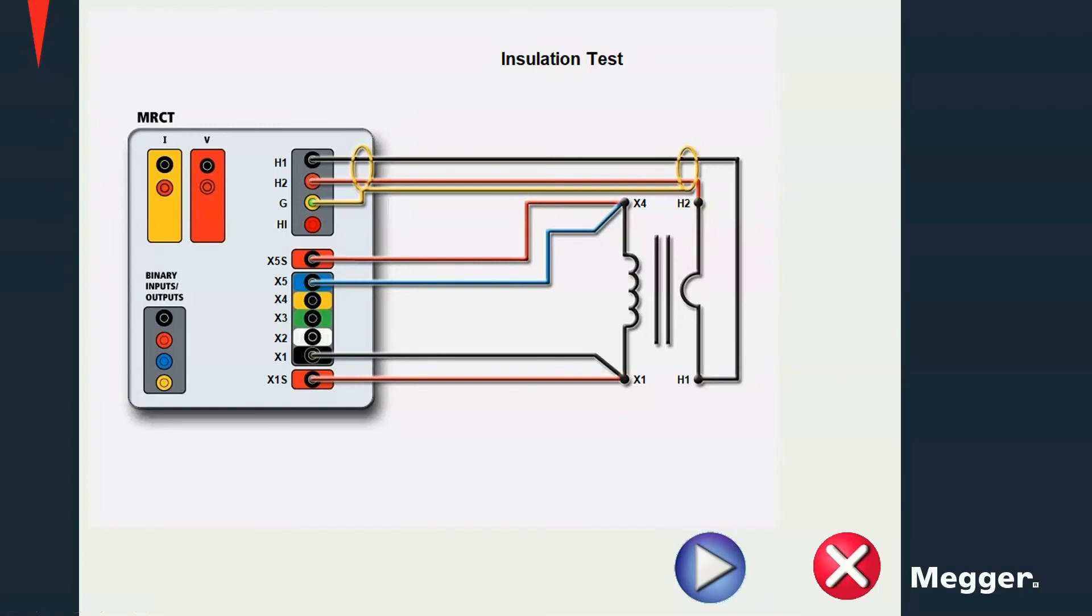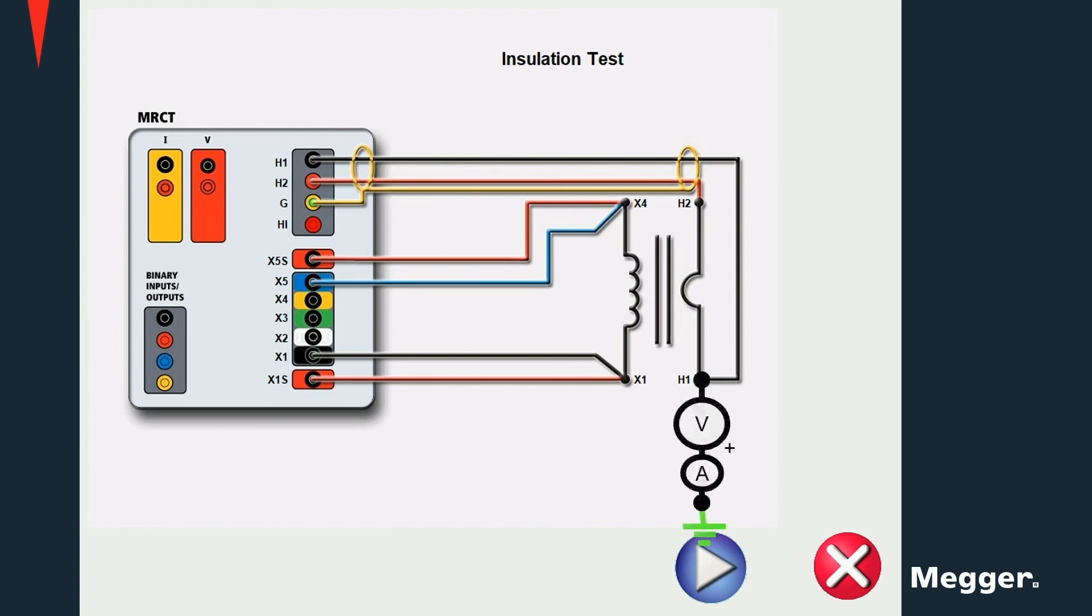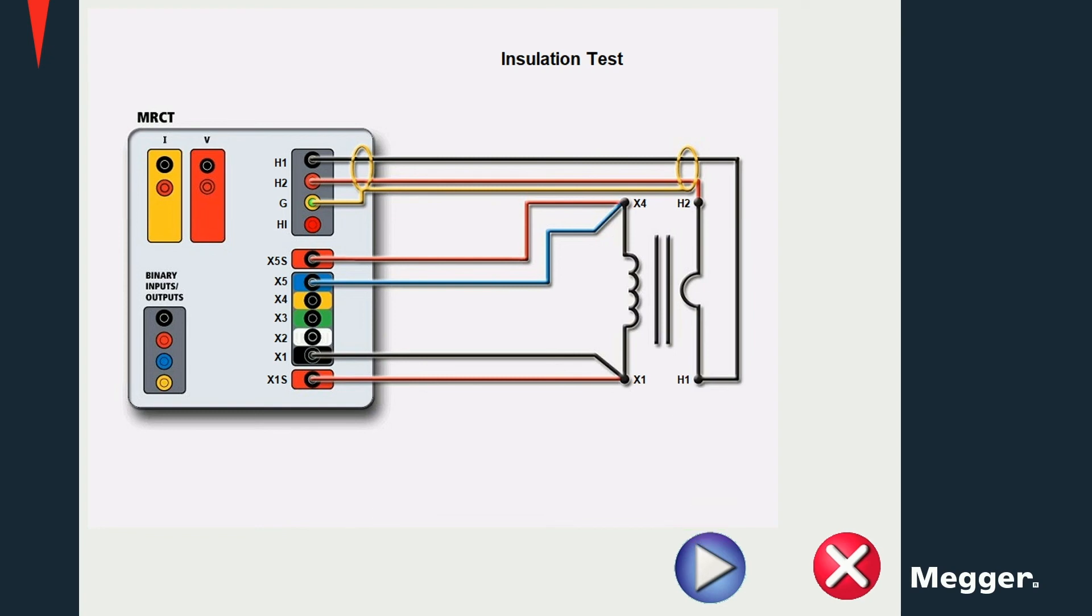For a primary to secondary insulation test, voltage is applied between the primary and the secondary of the CT, and the leakage current is measured. The resistance is then calculated as the ratio between the voltage and the current. For a primary to ground insulation test, a voltage is applied to the primary of the CT, the leakage current is measured, and the resistance is calculated as the ratio of the voltage and the current. For a secondary to ground insulation test, the voltage is applied to the secondary of the CT, the leakage current is measured, and the resistance is calculated using the same method.